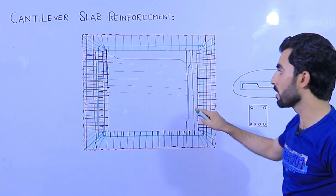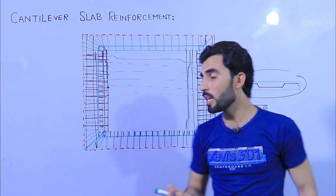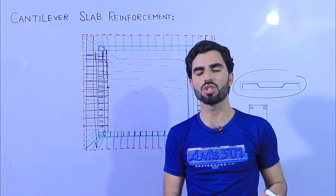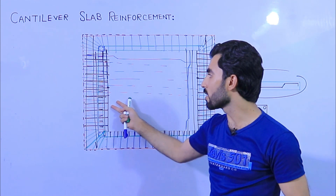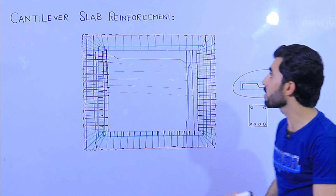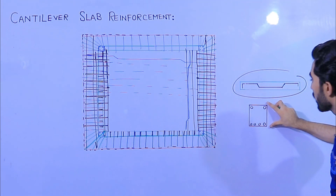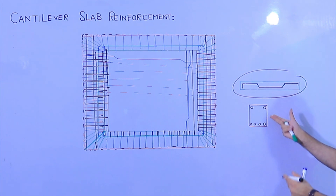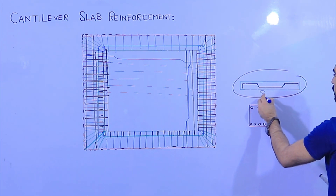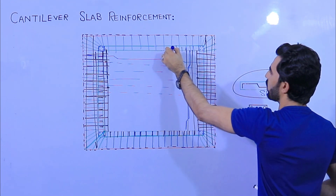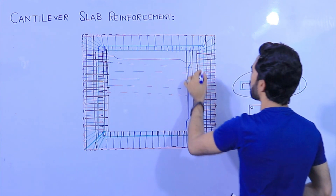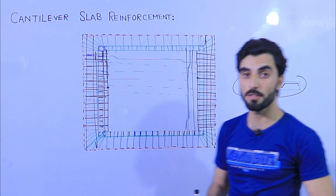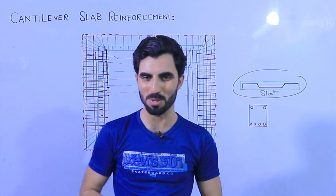Then you can cast the concrete, and it will be strong — it will not fail and will not produce cracks. You can take about 1.25 meters for the cantilever slab span. So this is the cantilever slab reinforcement detail I have discussed. The crank bar or bent-up bar in the beam is very important. If you have any questions about cantilever slab reinforcement detail, comment below and I will try to reply. Thanks for watching, see you in the next video, goodbye.